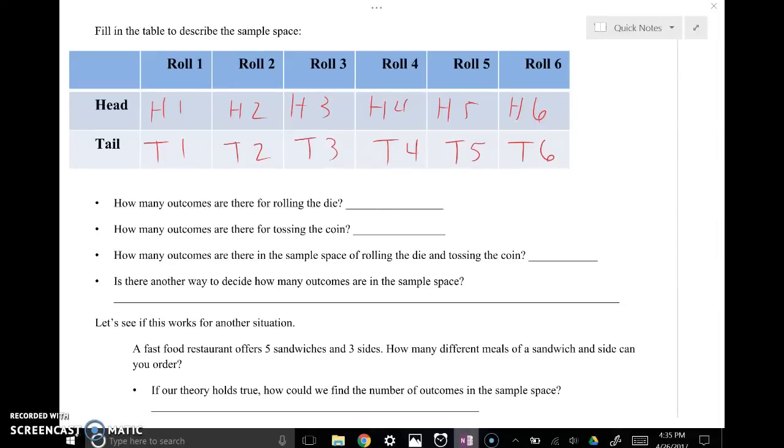Now we're just going to kind of work through this example. How many total outcomes are there? Well, there are two, four, six, eight, ten, twelve total outcomes possible. How many outcomes are there for tossing a coin? There, I'm sorry, let me back up. I did total outcomes. Let me try that one more time.